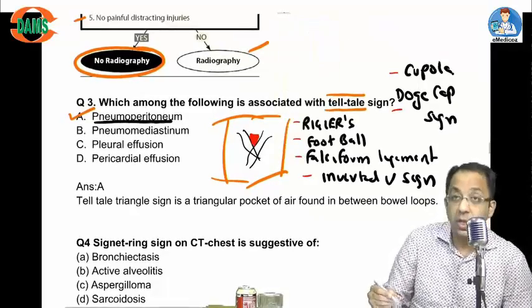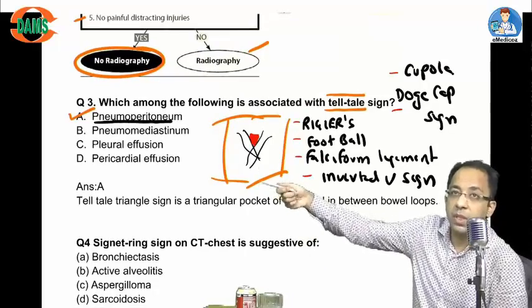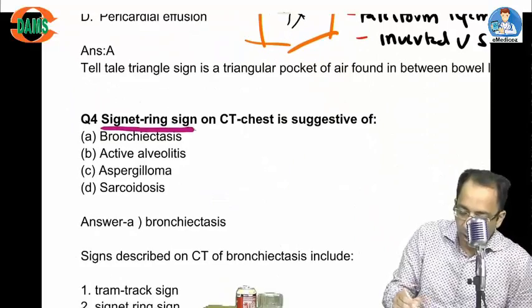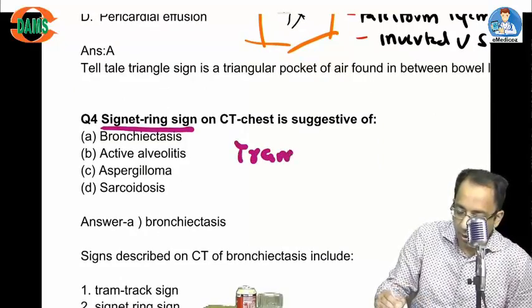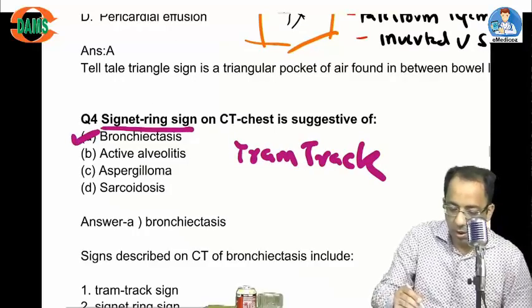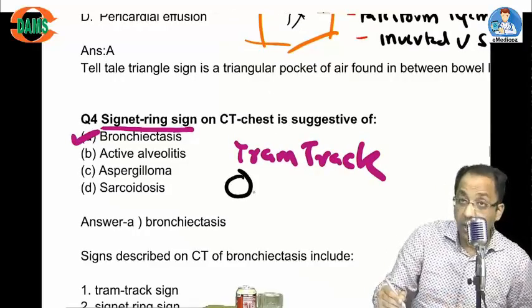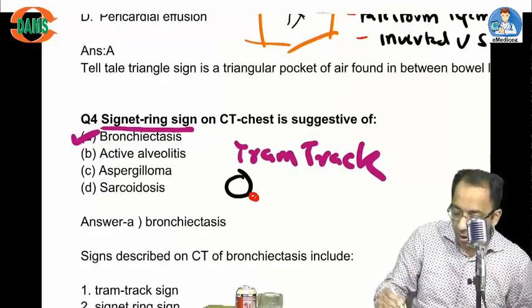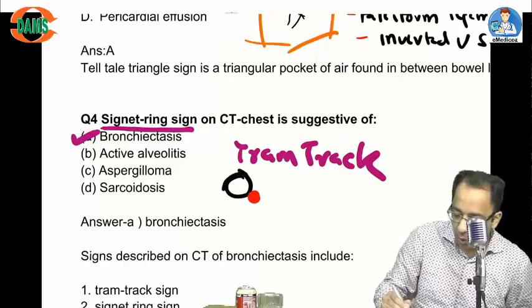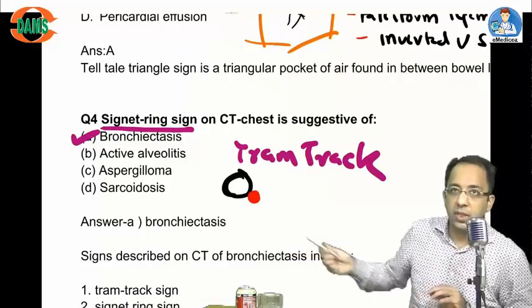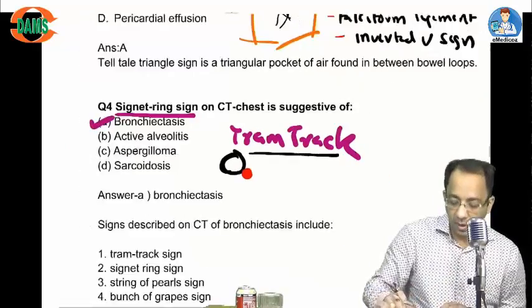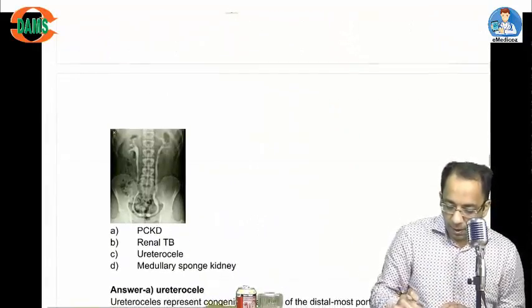A previous PGI Chandigarh MCQ: signet ring sign and tram track sign on CT scan are seen in bronchiectasis. The signet ring sign occurs because normally the bronchus and accompanying vessel are of comparable diameter, but in bronchiectasis the bronchus dilates, making it look like a signet ring around the vessel. The tram track sign is another important finding to remember for bronchiectasis.